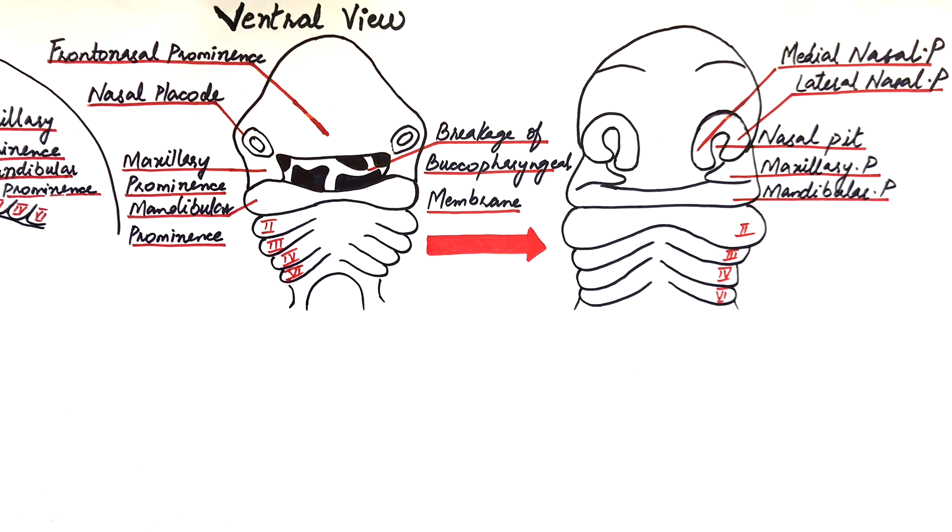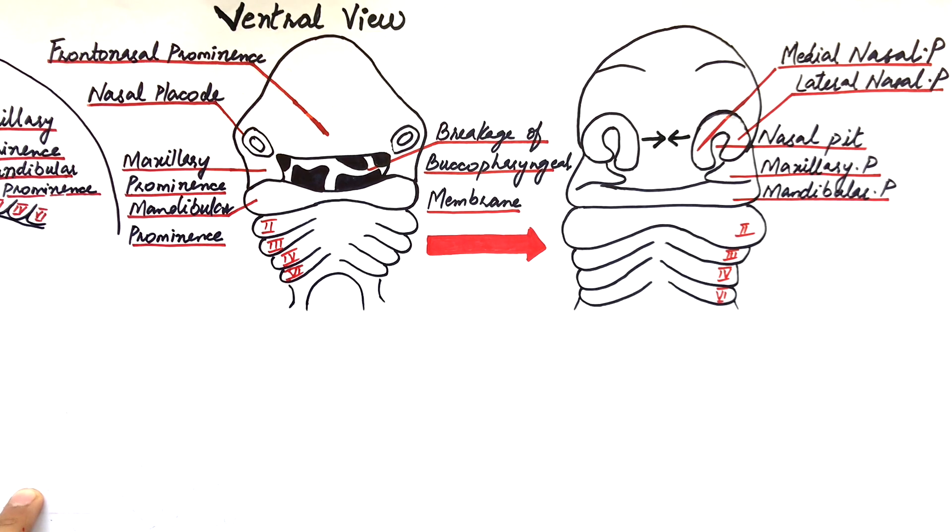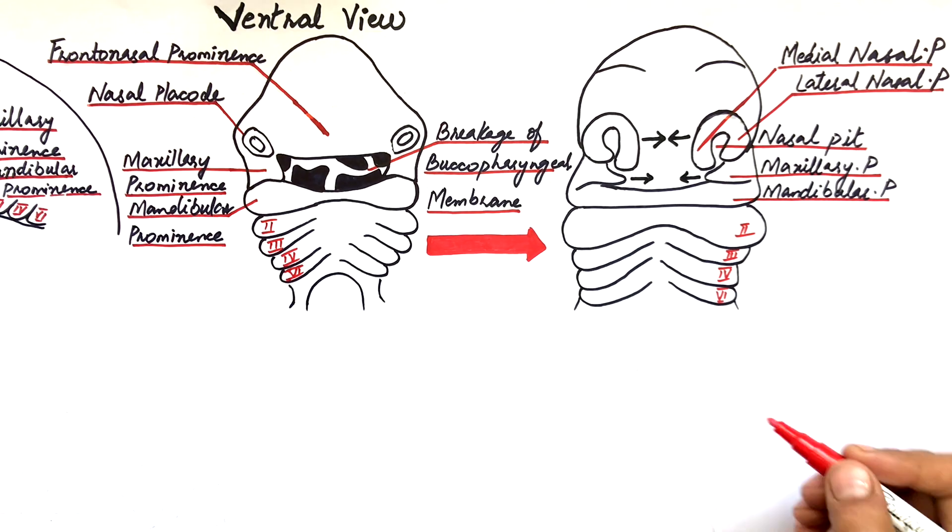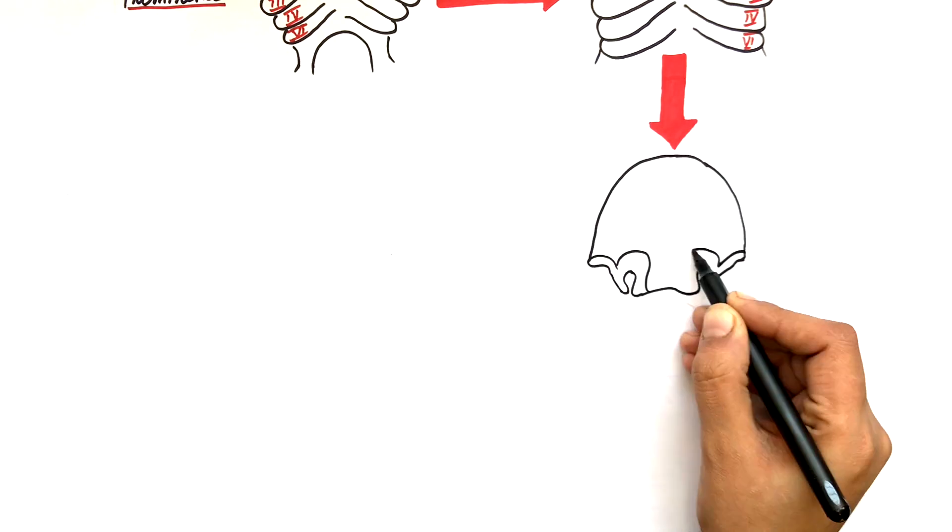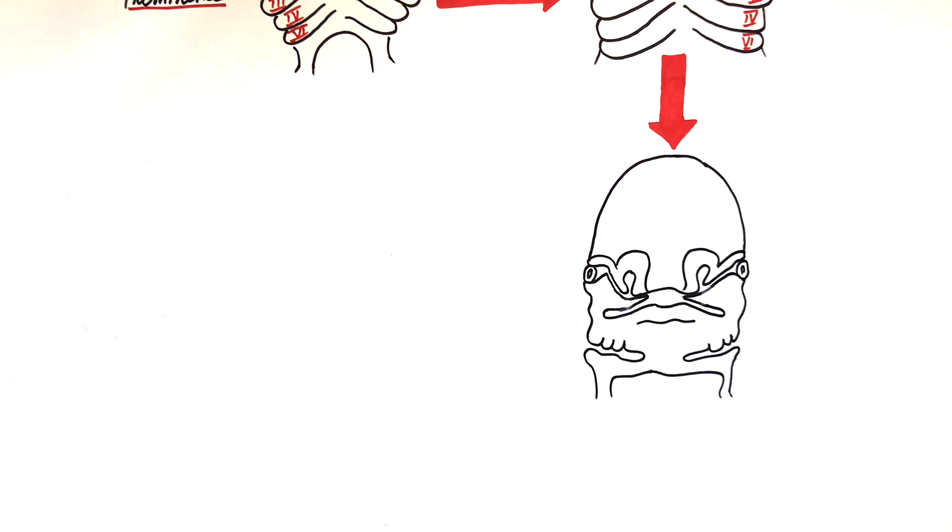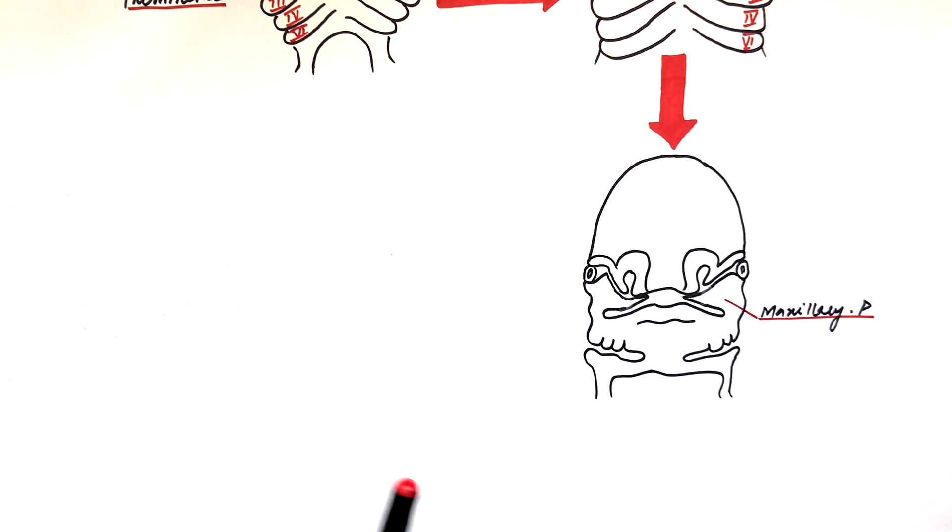As the sixth week arises, the maxillary processes on both sides will grow towards each other, which results in approximation of the nasal processes on both sides. But the processes remain separated from each other by certain grooves.